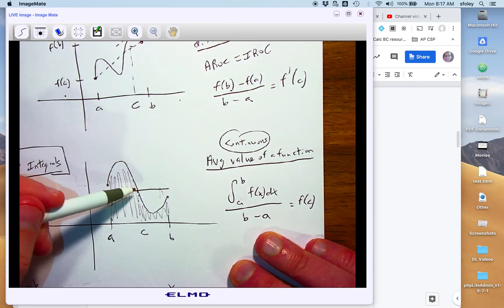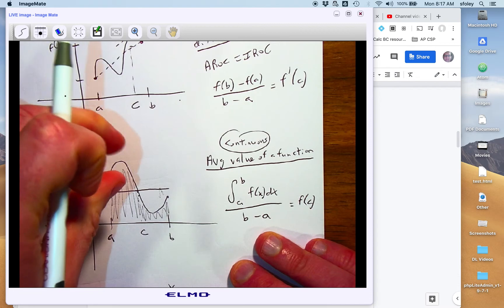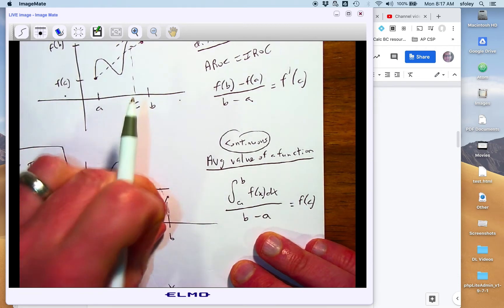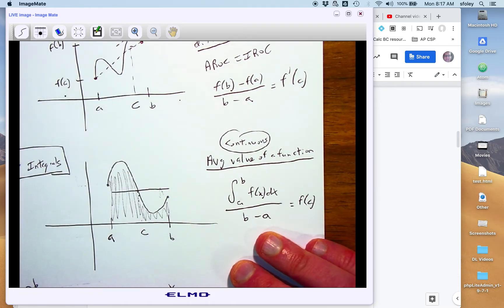The only way it wouldn't hit the average value is if you were completely above the average value or completely below the average value the entire time. But then that doesn't really make sense for that being the average value if you're above it or below it continuously.